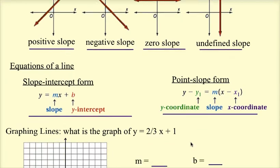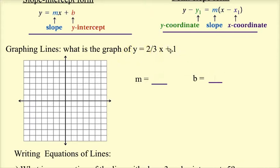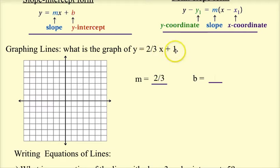Let's do a quick review of graphing. Graph the line y = (2/3)x + 1. Whenever I want to graph, I want my equation in slope-intercept form, y = mx + b. I need to identify my slope — m is the number next to x — so my slope is 2/3. My y-intercept is b, the number by itself, so my y-intercept is 1. To start graphing, I go to my y-intercept.